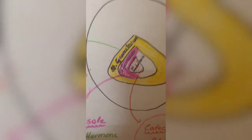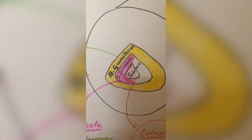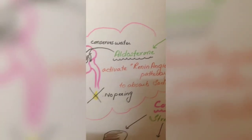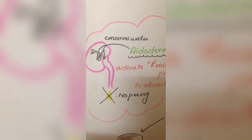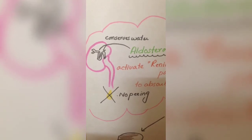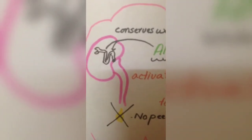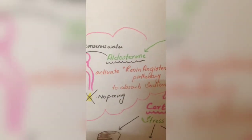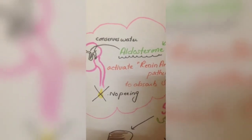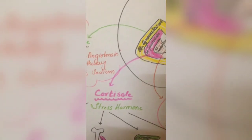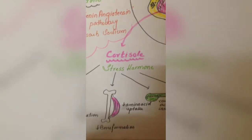The adrenal gland has three layers: zona glomerulosa, zona fasciculata, and zona reticularis. Zona glomerulosa secretes the hormone aldosterone. Aldosterone activates the renin-angiotensin pathway, which acts on the nephron. In the nephron, sodium is absorbed, and water gets absorbed along with it — hence the patient does not urinate. Water is conserved and cardiac output is maintained.